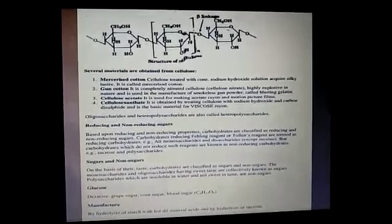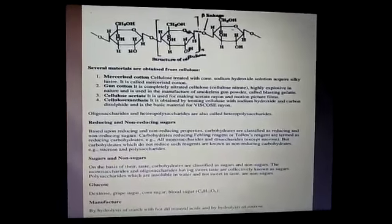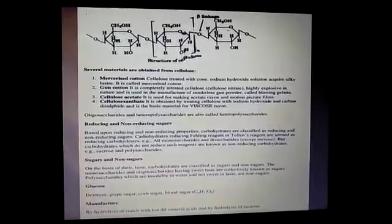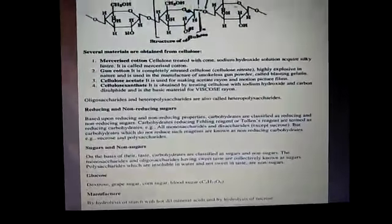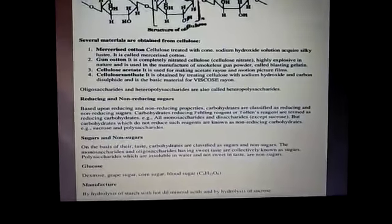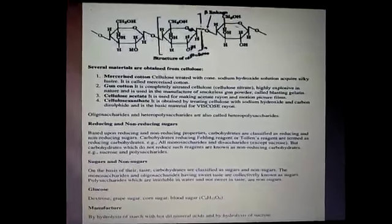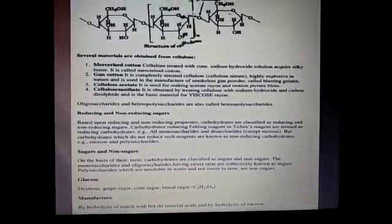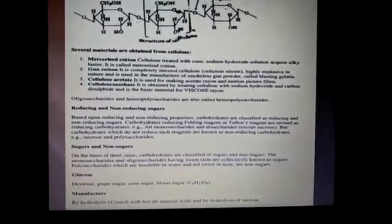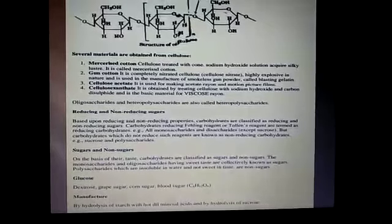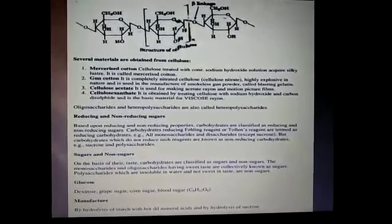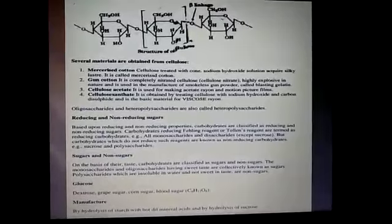Now, what are reducing and non-reducing sugars? Carbohydrates are further classified as sugars and non-sugars. All monosaccharides and oligosaccharides are crystalline solids, soluble in water and sweet in taste — these are collectively called sugars. Polysaccharides, on the other hand, are amorphous solids, insoluble in water and tasteless, and thus are called non-sugars.